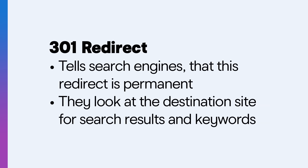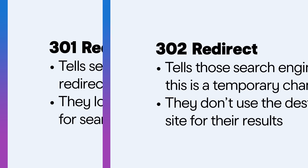What's the difference between a 301 and a 302 redirect? Well, 301 redirects tell search engines like Google and Bing that this redirect is permanent and they should look at the destination site for search results and keywords. 302 redirects tell those search engines that this is a temporary change, so they shouldn't use the destination site for their results. You might use this if you're prepping a new website for this domain but need to send your visitors to the old site temporarily.